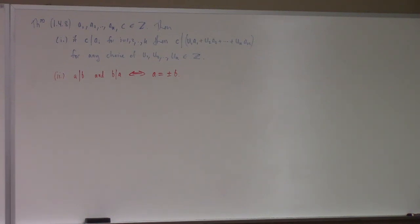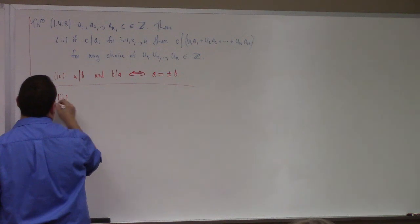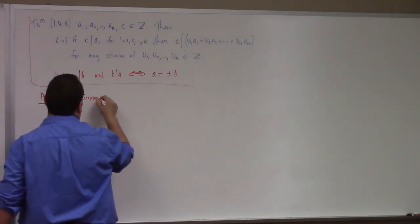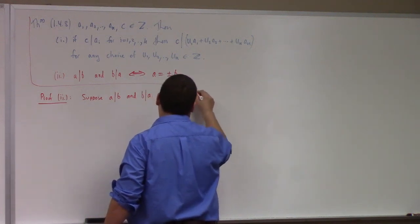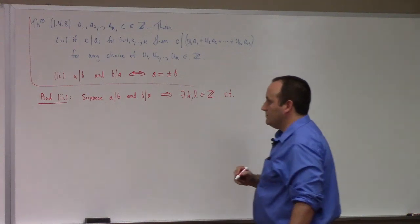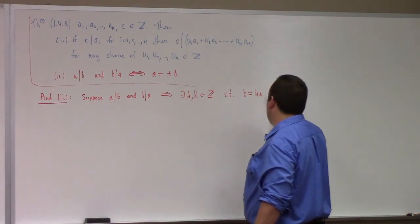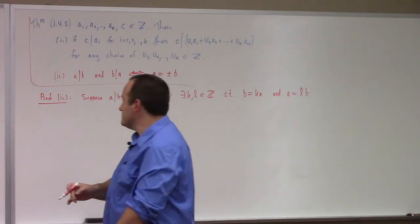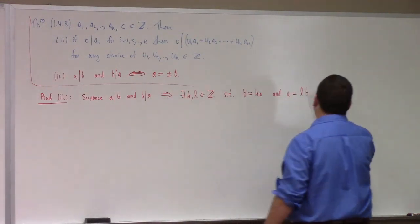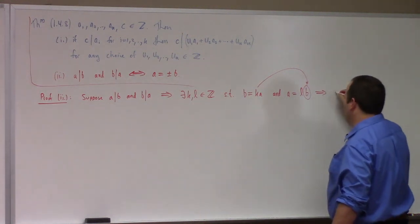The proof of 1 is very much the same as the proof I went over already today, so I'll skip that one. Let me look at the proof of 2 because it involves a new idea. Suppose a divides b and b divides a. That implies there exist k and l in the integers such that b equals k·a and a equals l·b.